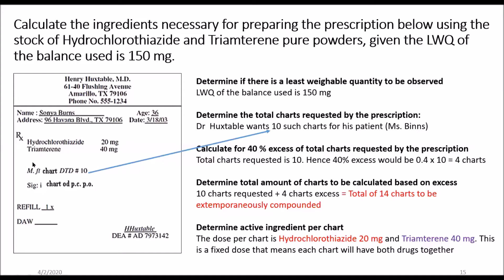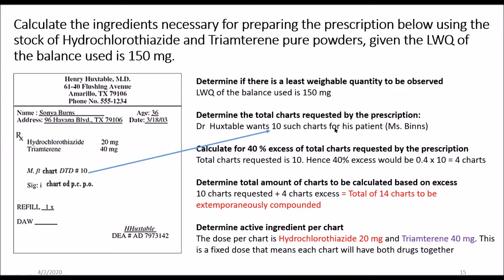MFT chart indicates that each chart will contain 20 milligrams hydrochlorothiazide and 40 milligrams triamterene, and you are dispensing 10 doses to Ms. Binns. Because we are working with powders and expect some loss, we are calculating for 40% in excess — that means four extra charts — so the total charts to be extemporaneously compounded is 14.